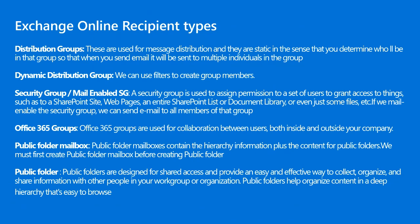Public folders help organize content in a deep hierarchy that's easy to browse. Public folder mailboxes contain the hierarchy information plus the content of the public folders, and we must first create a public folder mailbox before creating public folders. Distribution groups are used for message distribution and are static — you determine who will be in the group to send email to multiple individuals. Dynamic distribution groups use filters to create group membership, so when you send email to the group, it determines the individuals at that moment using the configured filters.